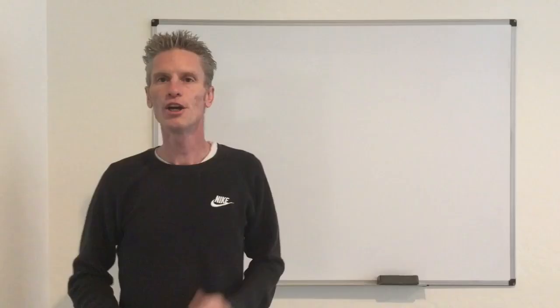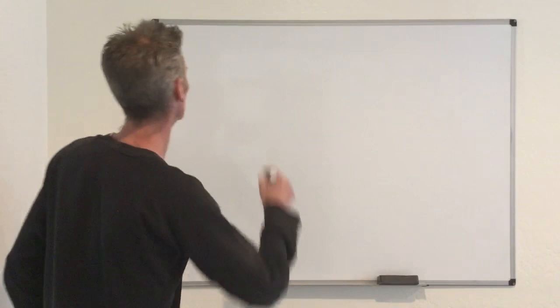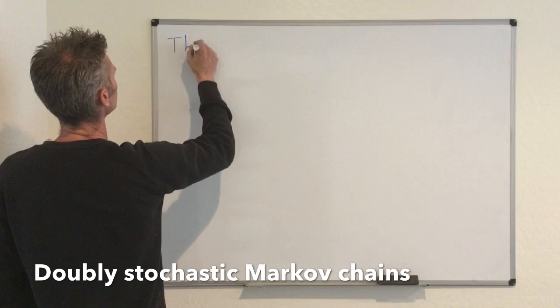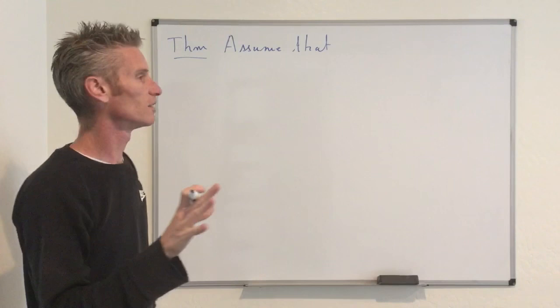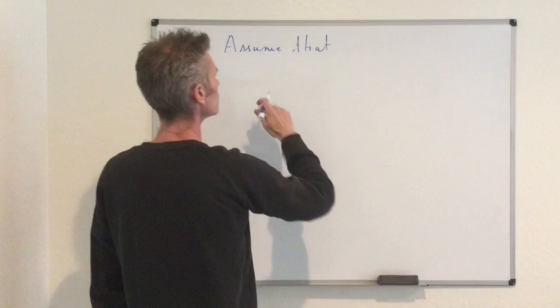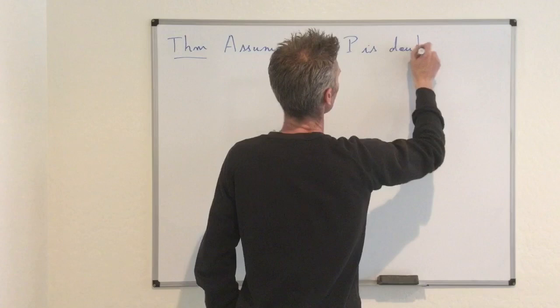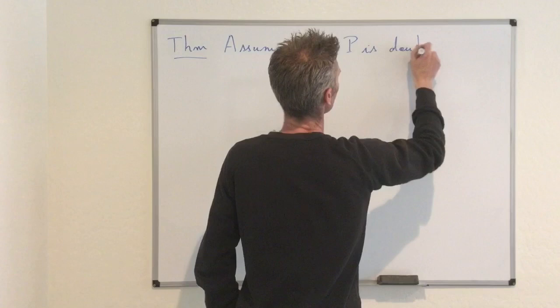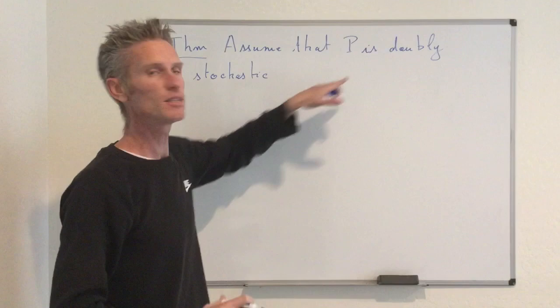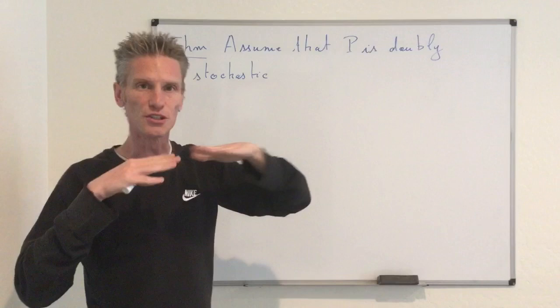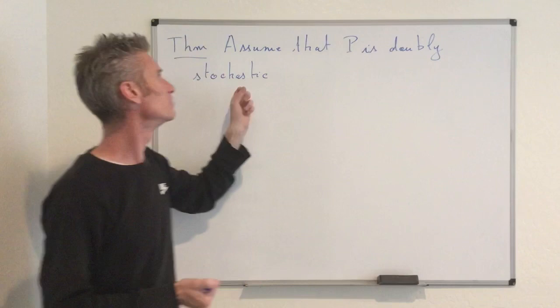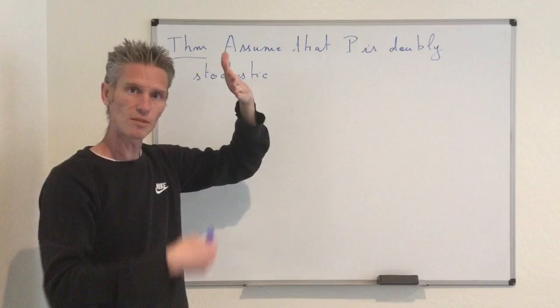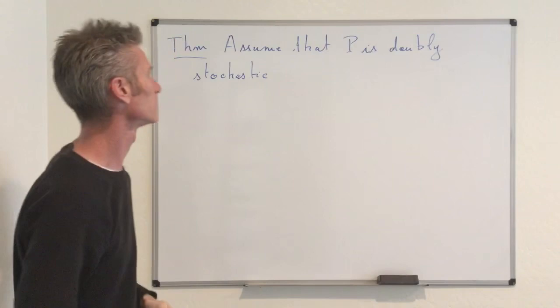First, I'm going to prove a general theorem about doubly stochastic Markov chains. The theorem says the following: assume that we have a discrete Markov chain whose transition matrix P is doubly stochastic. This means that not only is P stochastic — the sum of all coefficients on each row equals 1, which is always the case for a transition matrix — but also P transpose is stochastic. So the sum of all coefficients along any given column is also 1. That's what we mean by doubly stochastic.